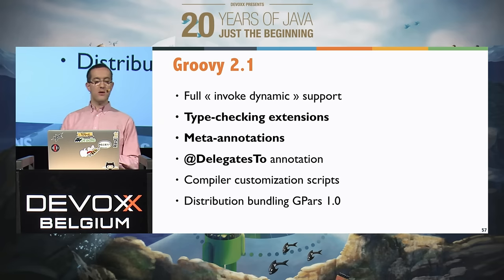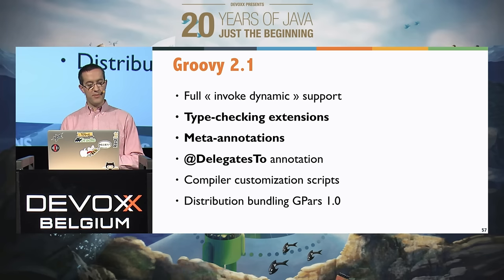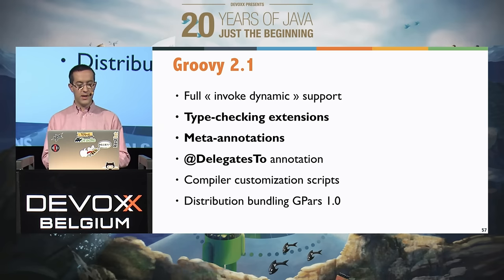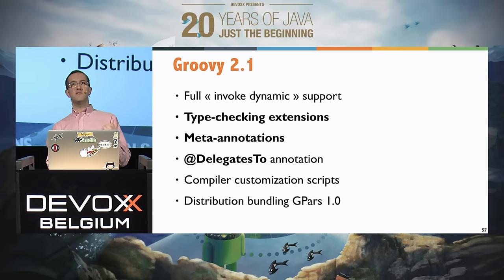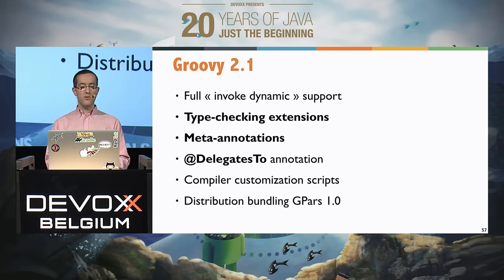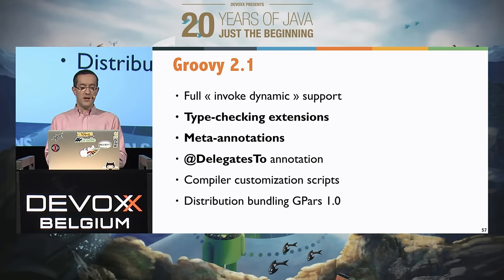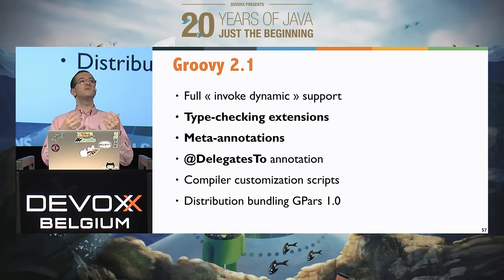In Groovy 2.1, we continued refining the InvokeDynamic support for better performance. What's interesting is that alongside the static type checker we implemented, we also allowed people to create their own type checking extensions. So even for a very dynamic Groovy DSL, you can create custom type checking extensions to generate compilation errors and analyze the code — you won't get runtime errors but compile-time errors if your DSL doesn't follow its own rules.